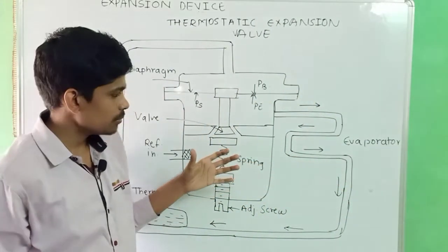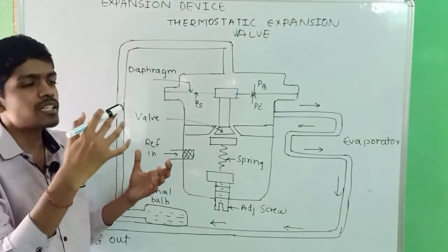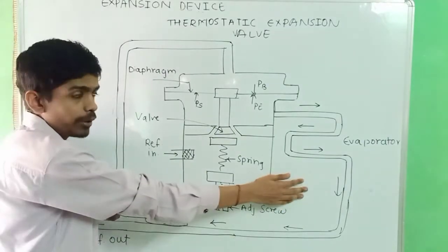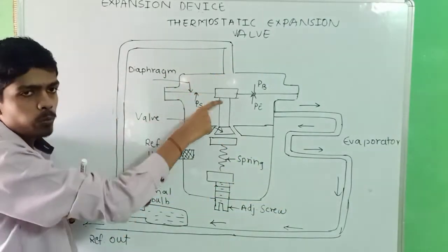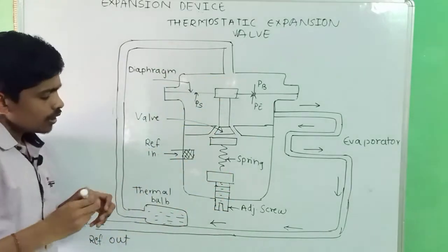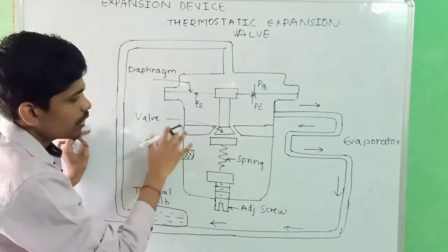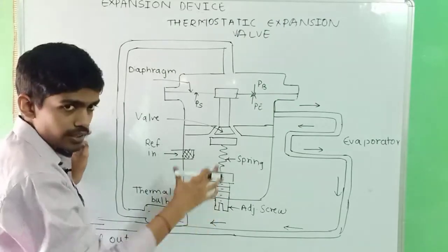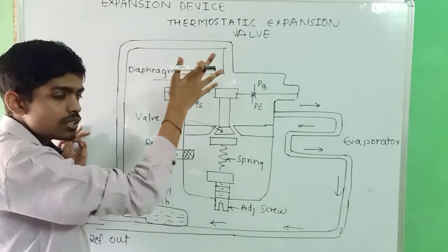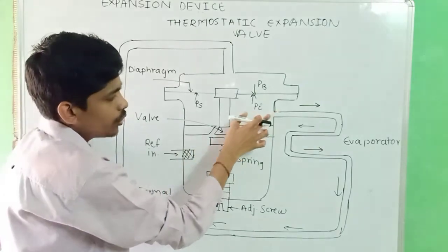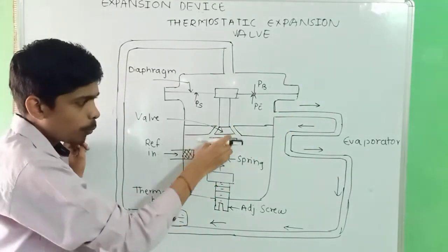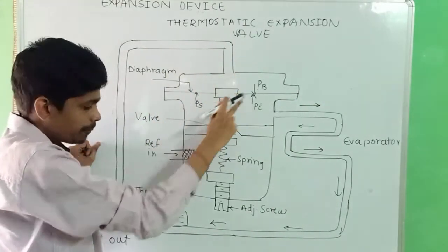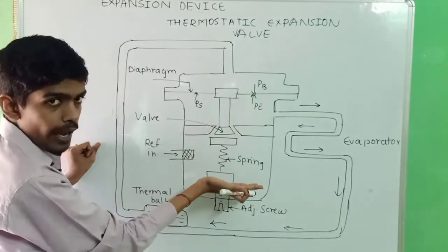Now, the Thermostatic Expansion Valve. The diagram is similar to the Automatic Expansion Valve; the only difference is that a filler bulb is attached on the outlet line of the evaporator, and that filler bulb is attached at the top of the diaphragm. The valve seat, strainer, and other arrangements are the same. Here, three pressures are acting: the bulb pressure acting from the top, and spring pressure plus evaporator pressure acting from the bottom.